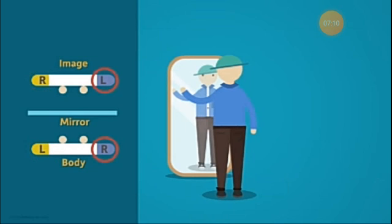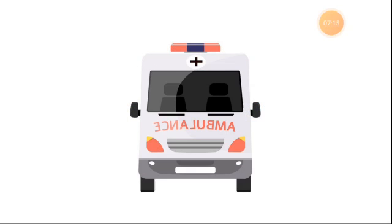Can you now understand why the word ambulance is written as shown in the picture? It is laterally inverted. When the driver of a vehicle ahead of an ambulance looks in his or her rear view mirror, he or she can read ambulance correctly written on it and give way to the ambulance. It is the duty of every one of us to allow an ambulance to pass without blocking its way.